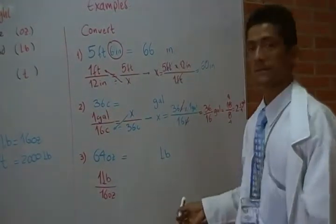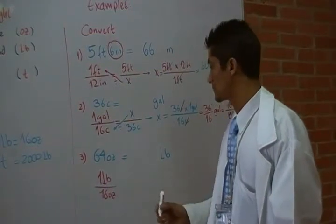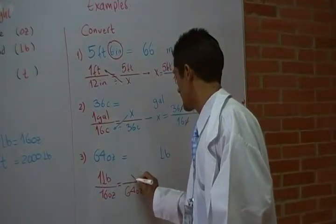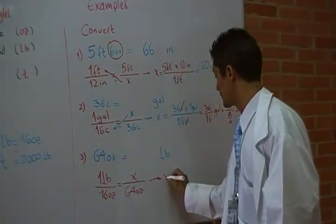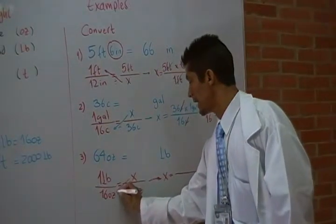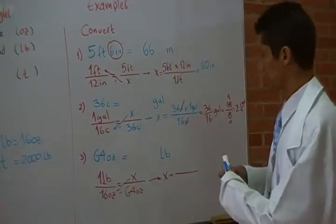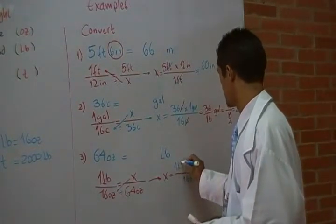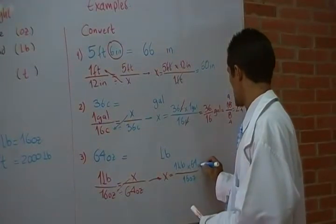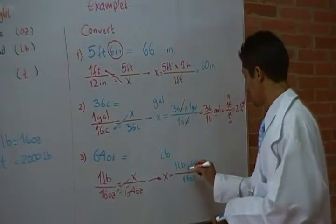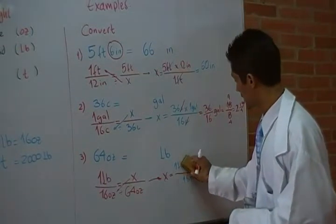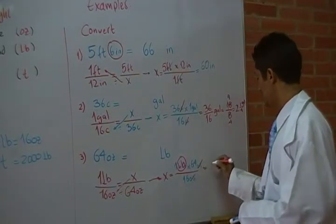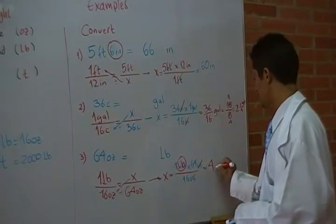And finally, here, my conversion factor is that 1 pound has 16 ounces. The question here is, 64 ounces is how many pounds? So, to clear for X, I'm going to divide by the diagonal term, which is 16 ounces, and then I'm going to multiply 1 pound times 64 ounces. Here, if I simplify the units, I can cancel out ounces with ounces, and the resulting units will be pounds. So, 64 divided by 16, 4 pounds.